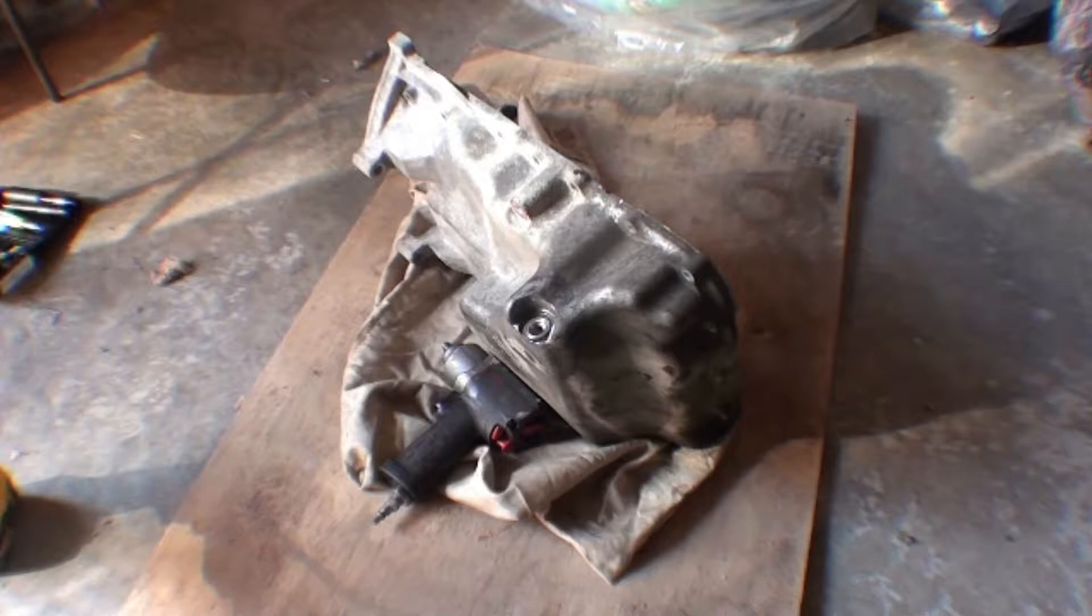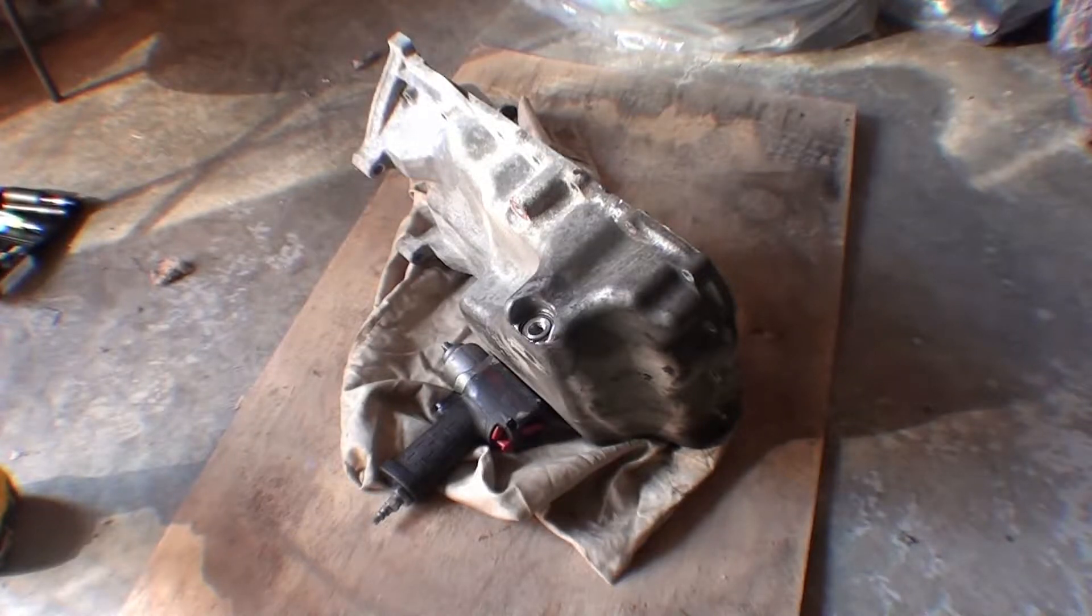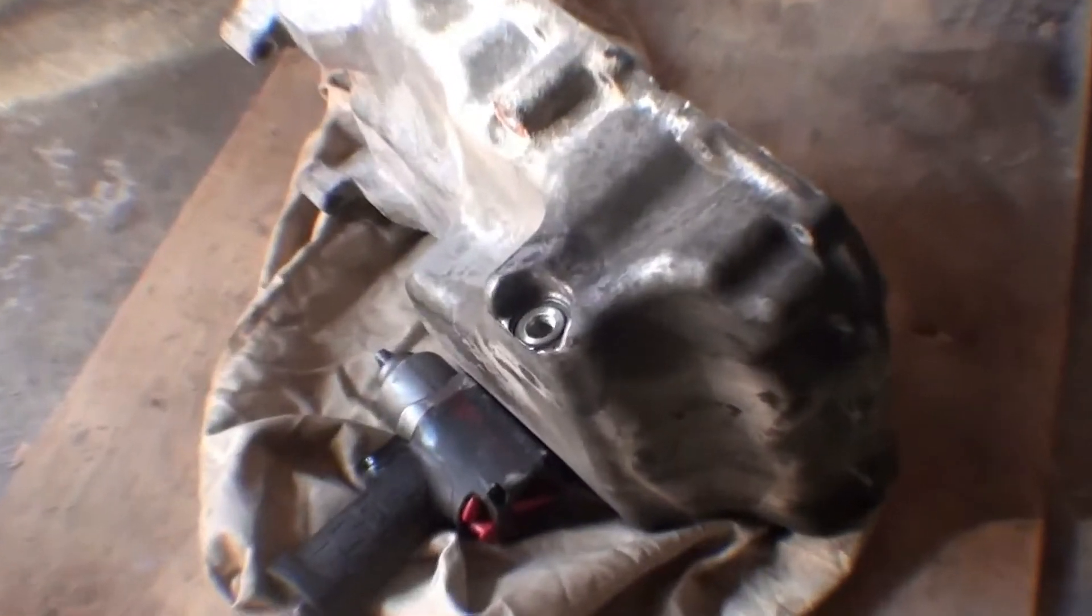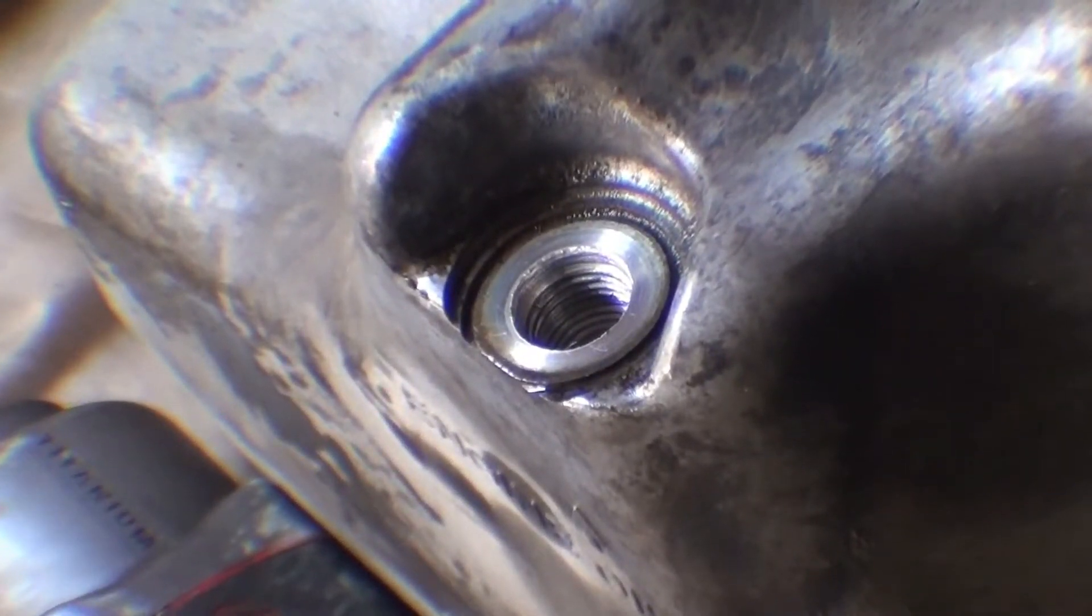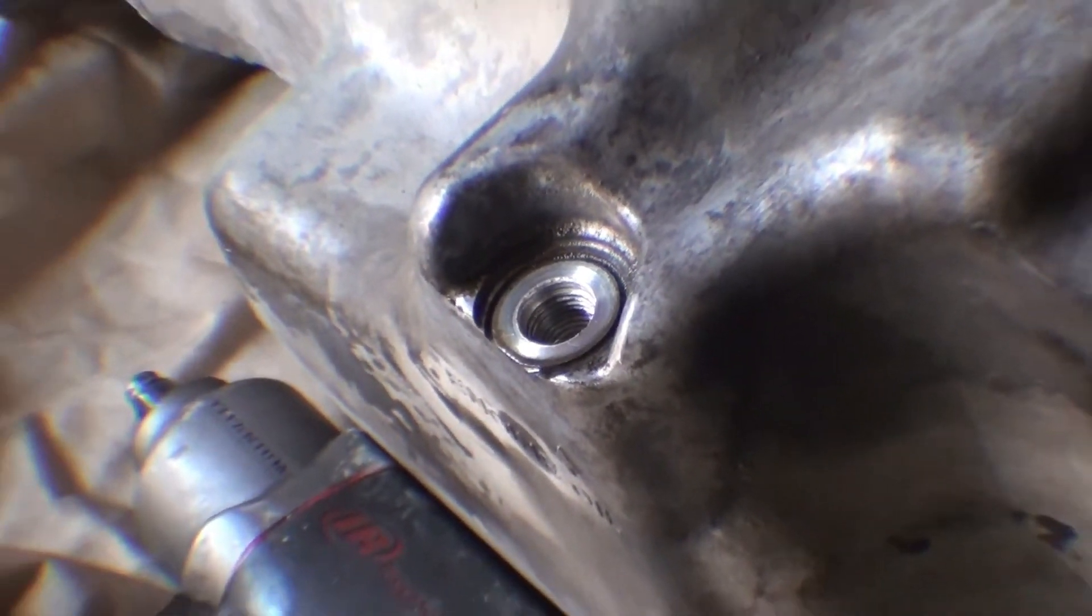You will need to remove the oil pan from the engine block and drill out the damaged threads with the supplied drill bit. Make sure you hold down the oil pan tight when drilling or the oil pan will fly all over the place.